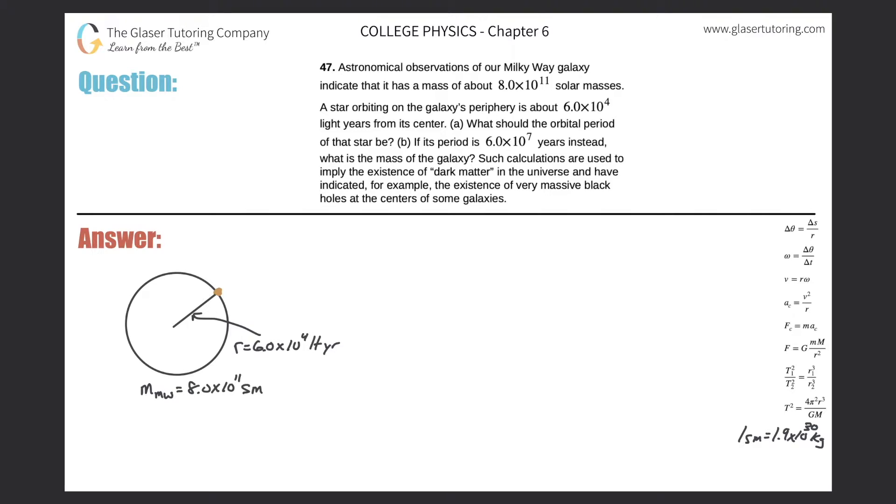Number 47. Astronomical observations of our Milky Way galaxy indicate that it has a mass of about 8 times 10 to the 11 solar masses. A star orbiting on the galaxy's periphery is about 6 times 10 to the 4 light years from its center. Letter A: What should the orbital period of that star be?